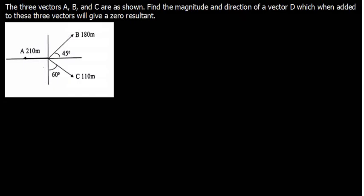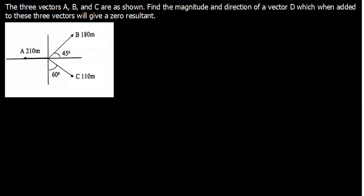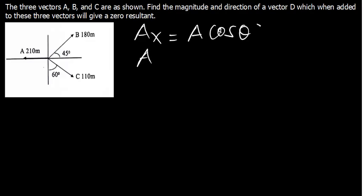Now, I believe you know how to resolve a vector into X component as well as the Y component. Just a recap: if you are trying to resolve any vector into its X component, it's going to be the vector times cosine of the angle. If resolving into Y component, it's the vector times sine of the angle. We measure angles from the positive X axis.